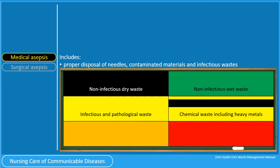Radioactive waste is disposed in orange bins, while sharps and pressurized containers are disposed in red bins.